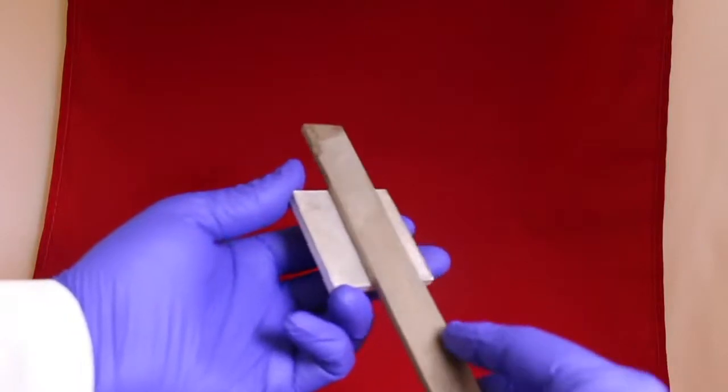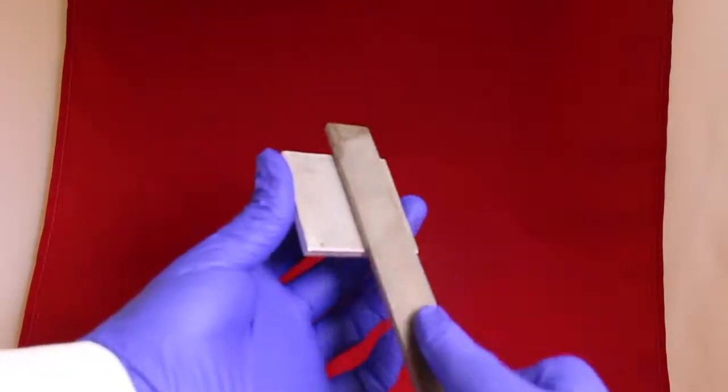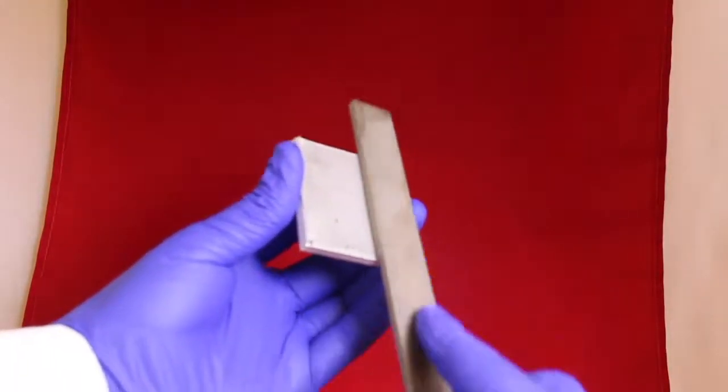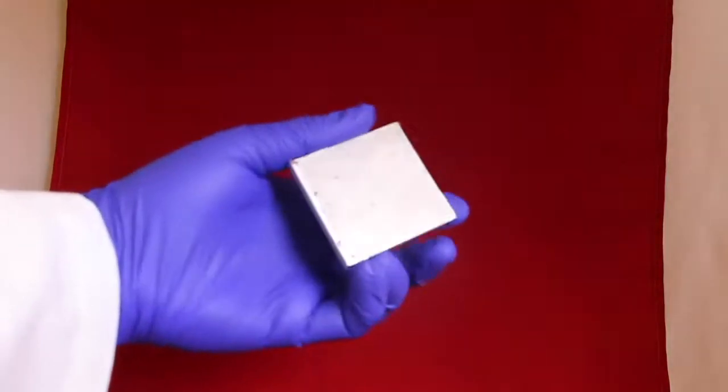To truly test our coating to the limits, we then try scraping the surface with a file. The file still is unable to remove the anti-icing properties that were applied to the surface by our spray.